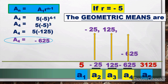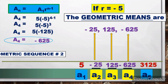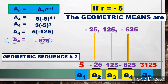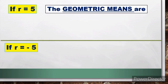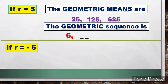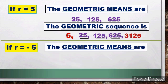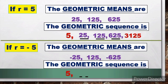When r = −5, the geometric means are −25, 125, and −625. The full geometric sequence is: 5, −25, 125, −625, 3125. To summarize: if r = 5, the geometric means are 25, 125, 625 and the sequence is 5, 25, 125, 625, 3125. If r = −5, the geometric means are −25, 125, −625 and the sequence is 5, −25, 125, −625, 3125.